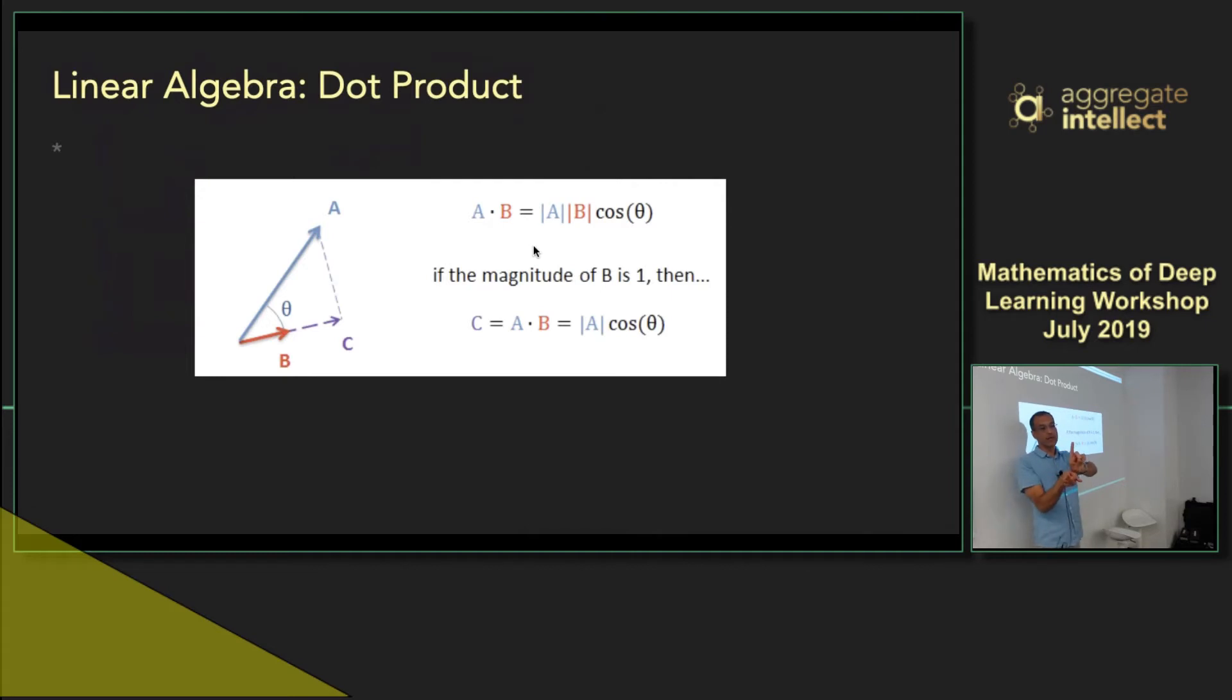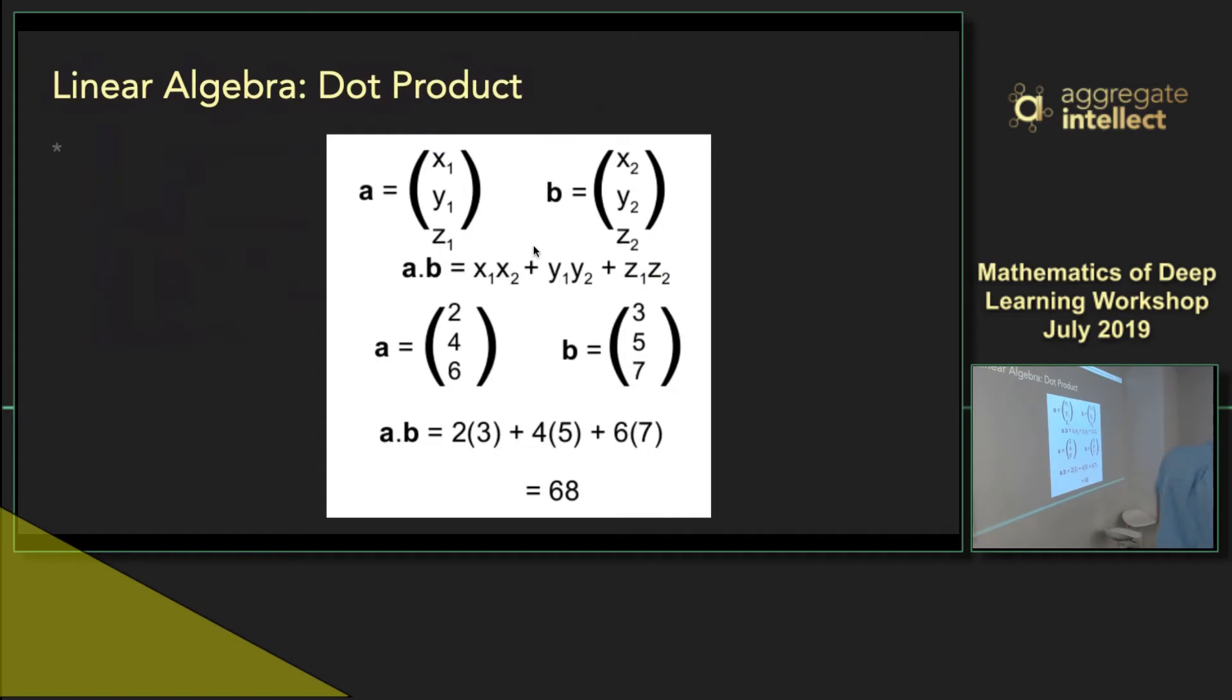It's minimum when they are perpendicular. If we represent the vectors in the vector format, a dot product means element-wise multiplication and the summation of the whole thing. For example, if my a vector is this, b vector is this, a dot b is 2 times 3 plus 4 times 5 plus 6 times 7, which is 68.